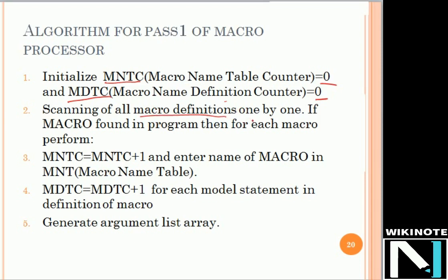We check whether there is any macro definition in our program. If we find a macro, for each macro we perform the following steps: first, increment the macro name counter by one, and enter the name of that macro into the MNT, the macro name table. After entering the name, we increment the macro definition table counter by one for each model statement inside the macro definition. Finally, we generate the argument list array, which contains the formal parameters as well as the actual parameters for one macro call.